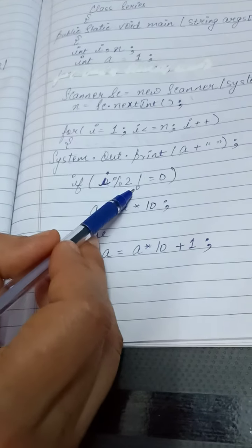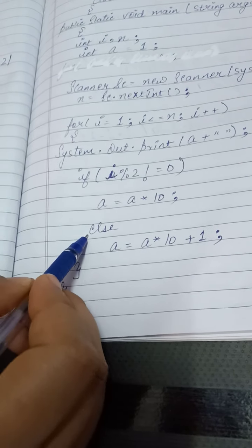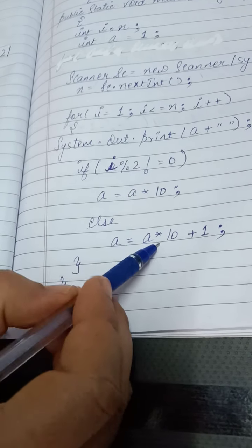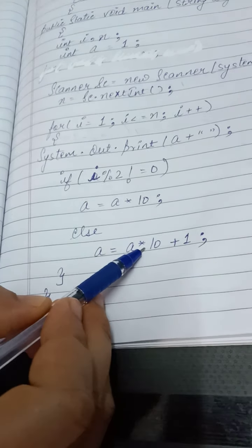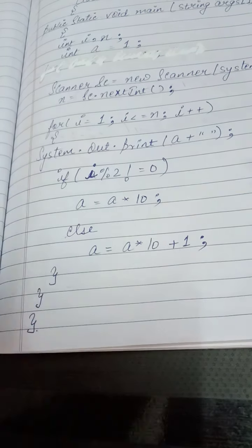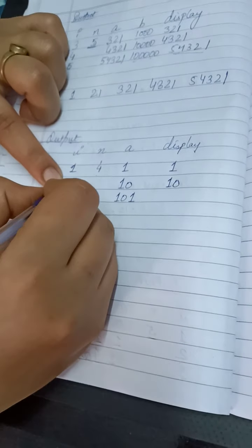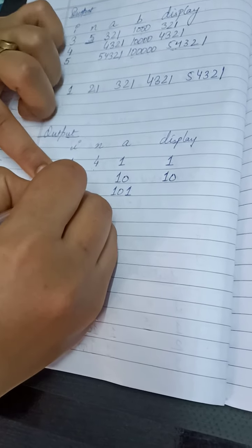Now value of i is 2. 2 modulo 2 not equal to 0, condition is false. So it will go to else part. Now a was 10, 10 into 10 is 100, and 100 plus 1 is 101. Now the value of a will become 101, and i will get updated. It will become 3.